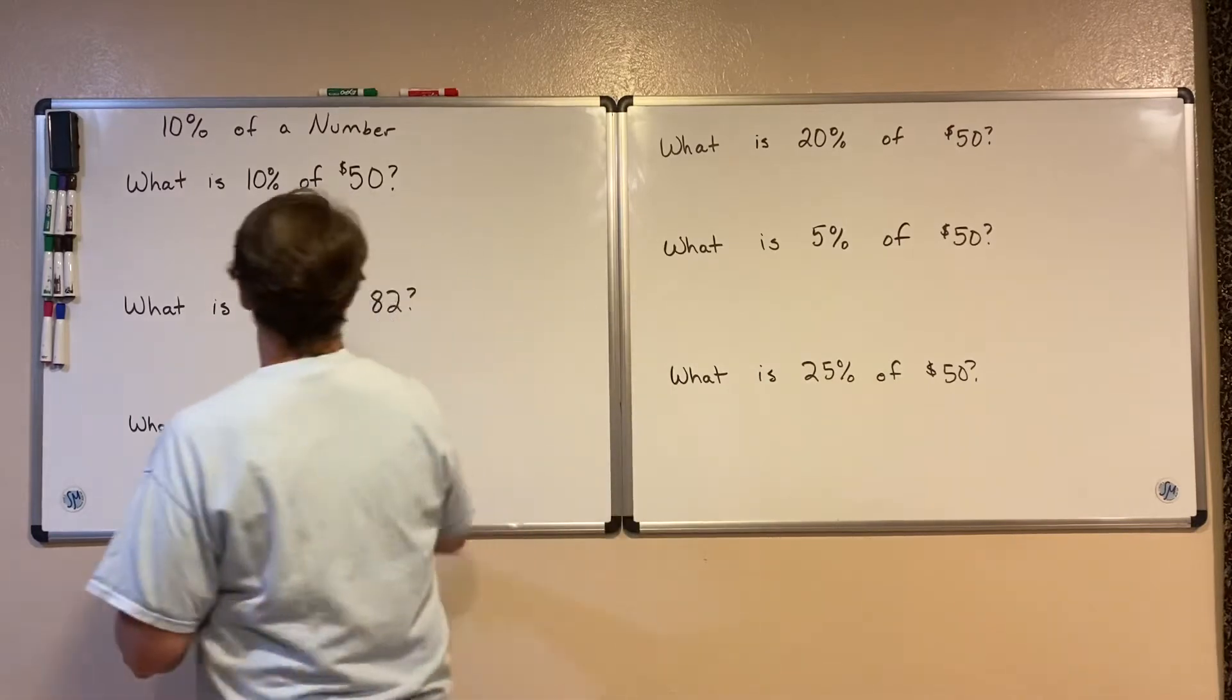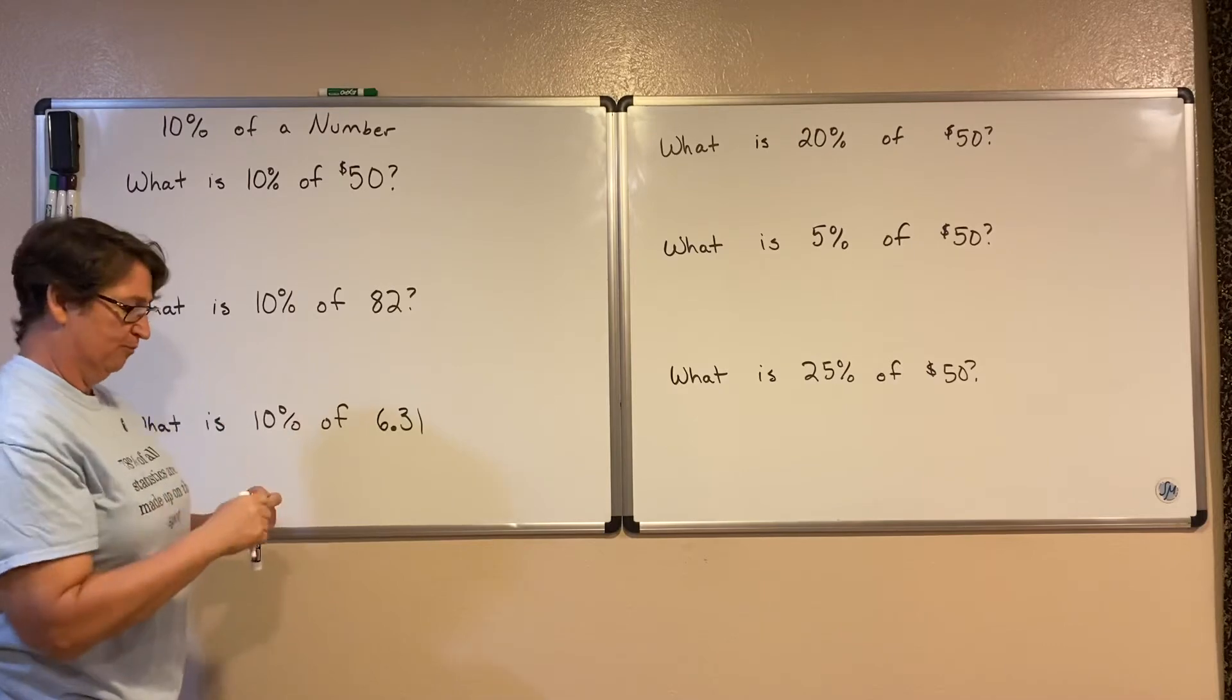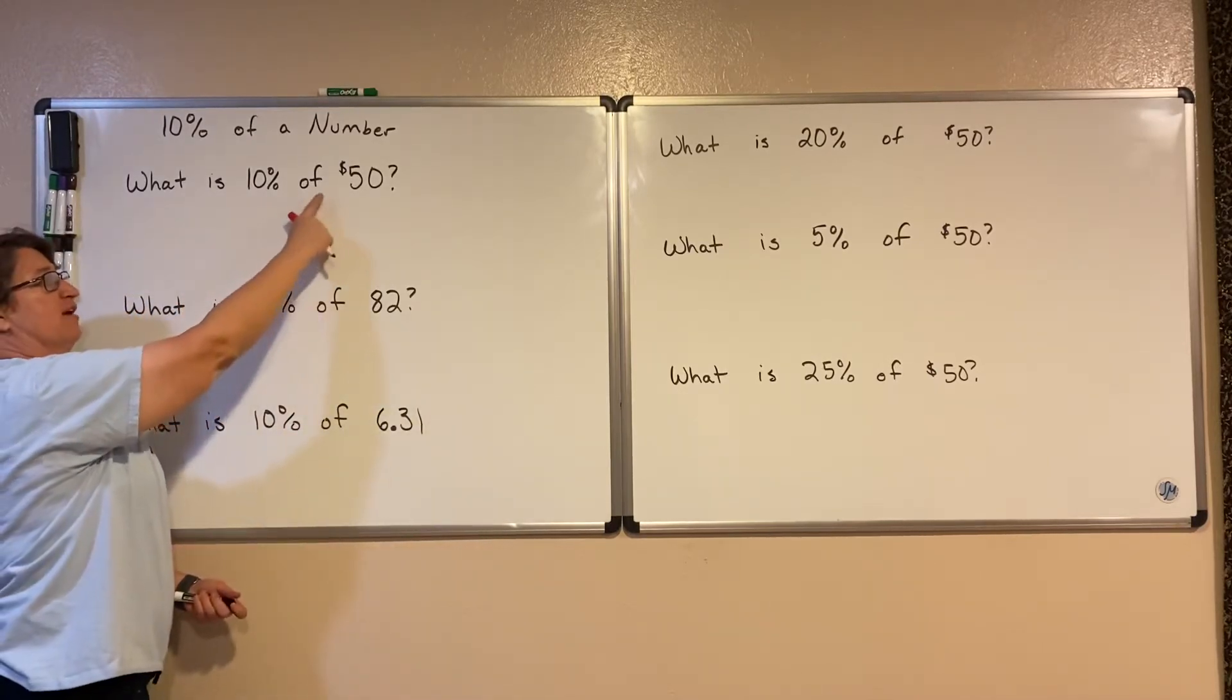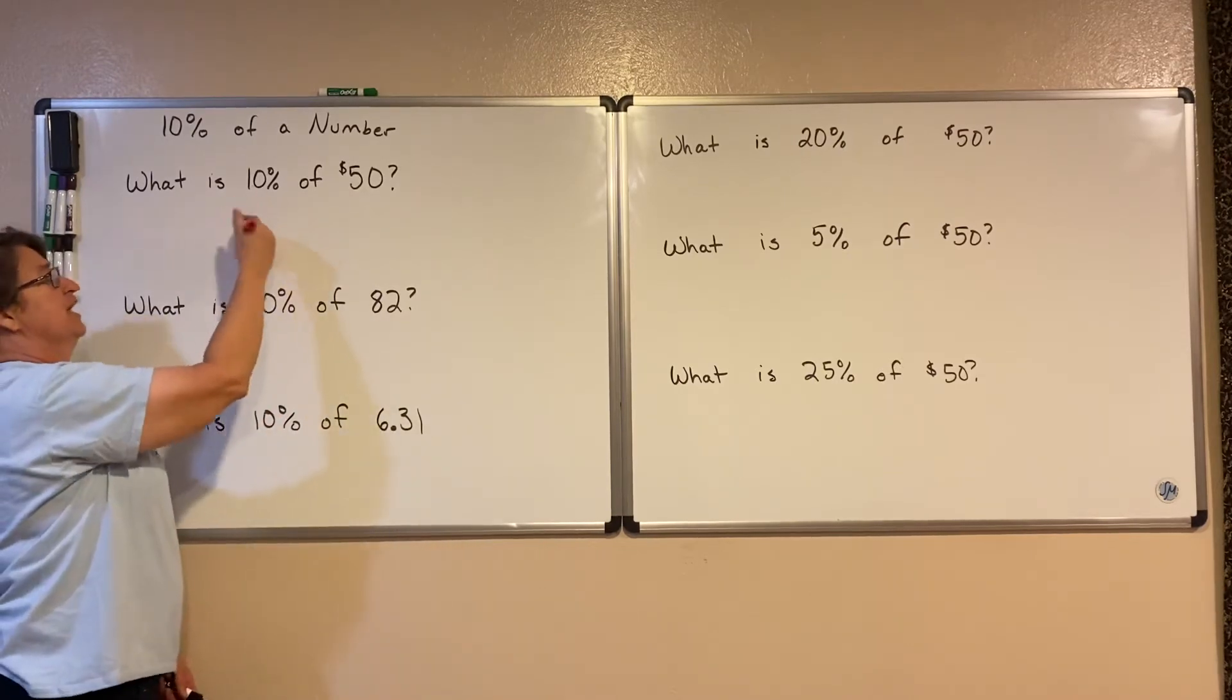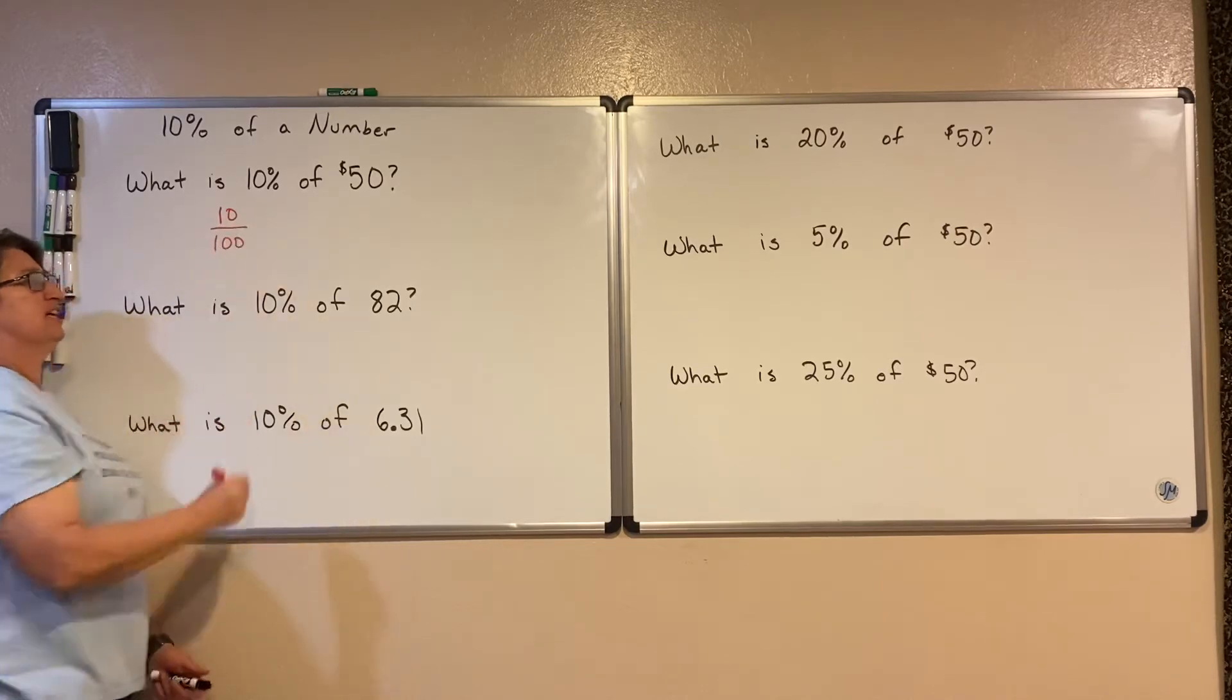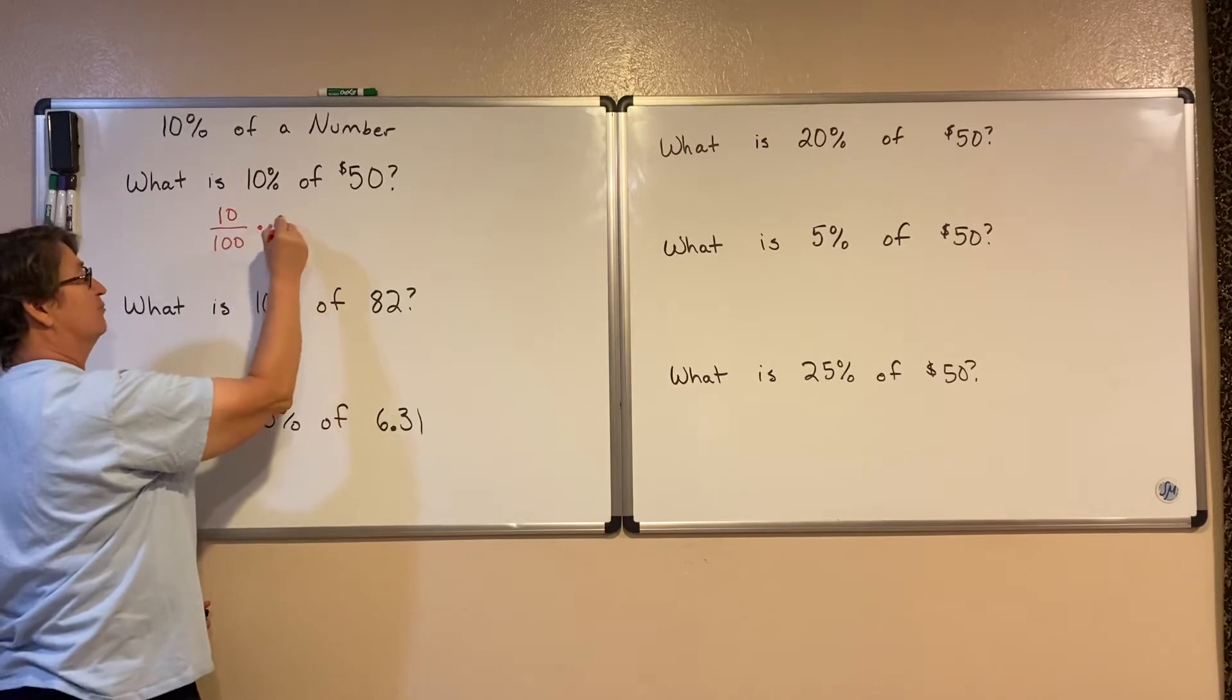So remember that percent is just a fraction. So in a previous video, we saw that all we do to find a percent of a number is we just simply multiply by that percent. And since 10% can be written as 10 over 100, we're just going to multiply 10 over 100 times 50.